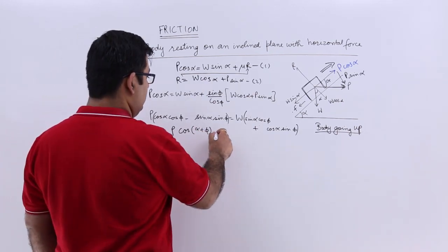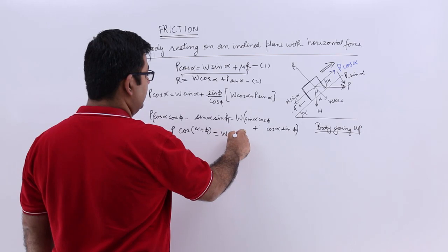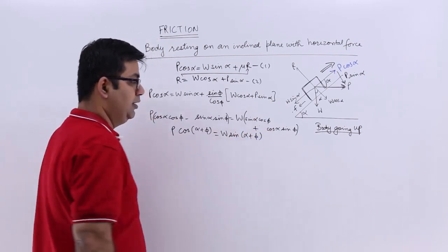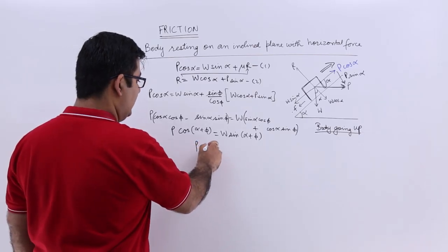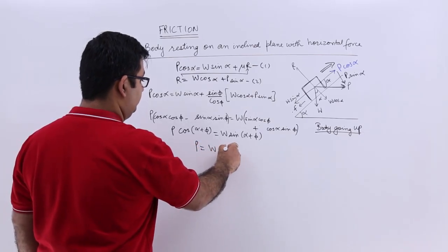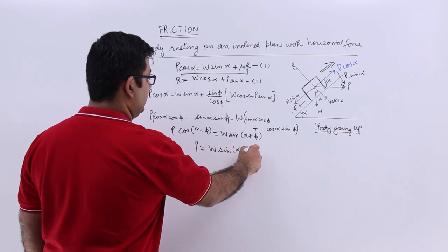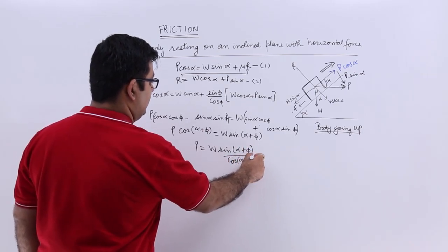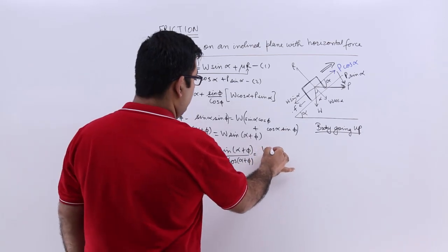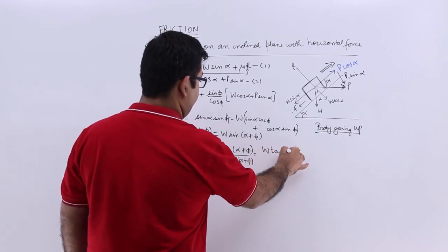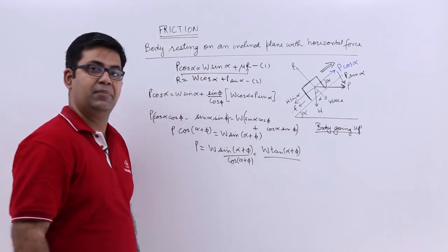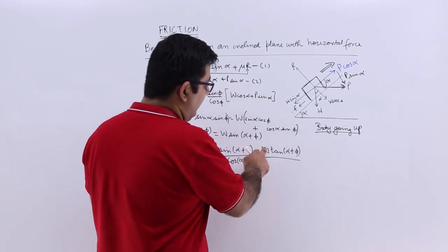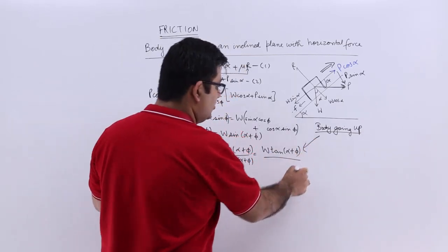This gives W sin(alpha + phi). So P equals W sin(alpha + phi) over cos(alpha + phi), which is W tan(alpha + phi). Therefore, P equals W tan(alpha + phi) when the body is going up the inclined plane.